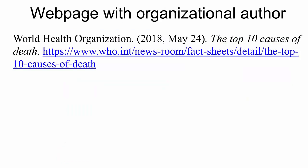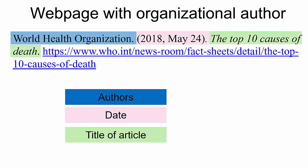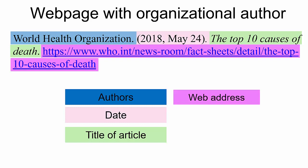Next is a website with an organizational author, also referred to as a corporate author. It will be whoever owns the copyright of the website and is used if there is no individual author indicated. This author name type is fully capitalized, like this example: World Health Organization. The date and title of the article follow the same format. Because you are using a corporate author who owns the copyright to the website, no platform name is needed. Finally, the web address as a live link with no period.